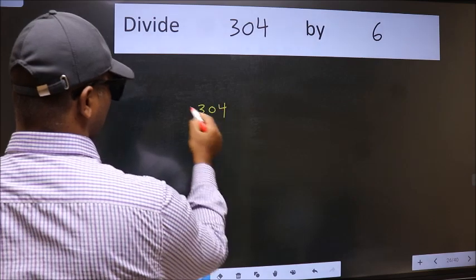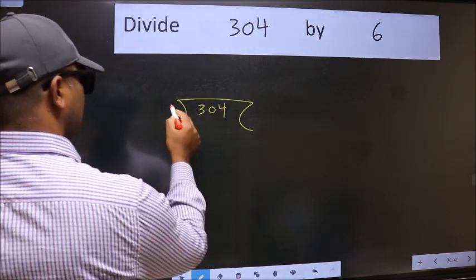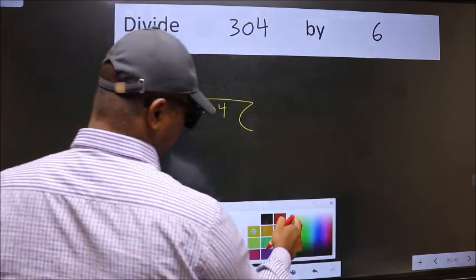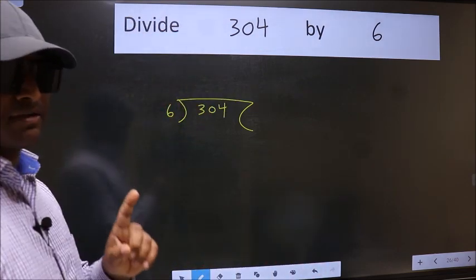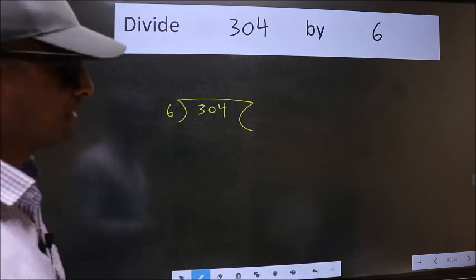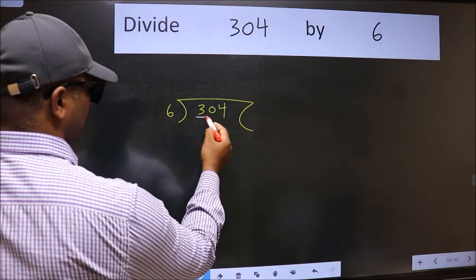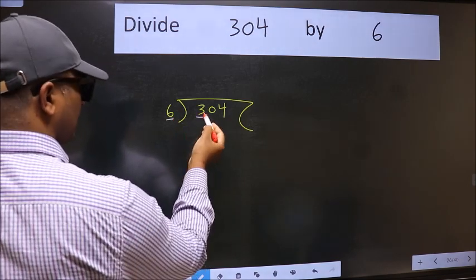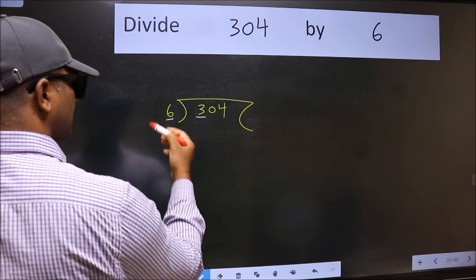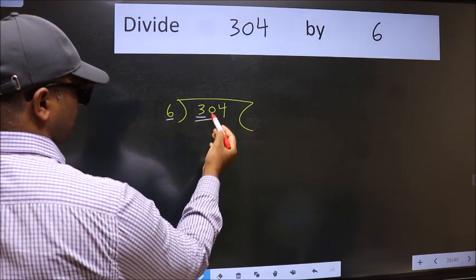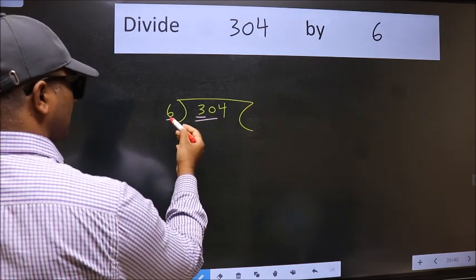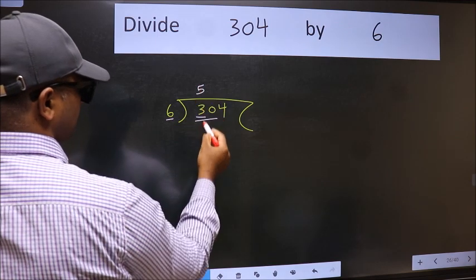304 and 6 here. This is your step 1. Here we have 3 and here 6. 3 is smaller than 6, so take 2 numbers: 30. When do we get 30 in the 6 table? 6 times 5 is 30.